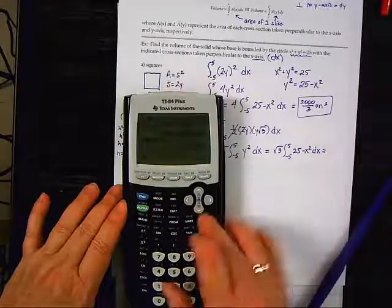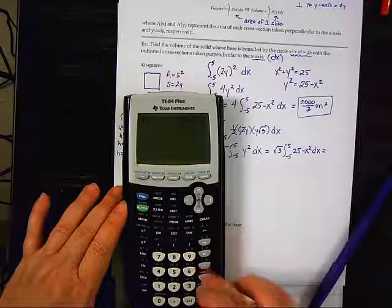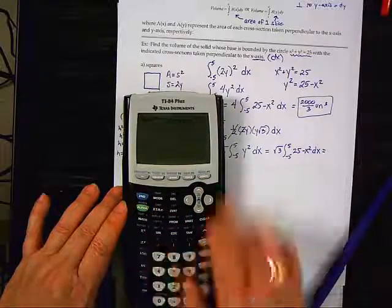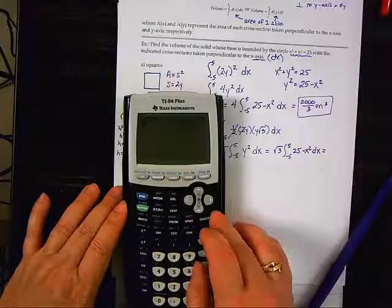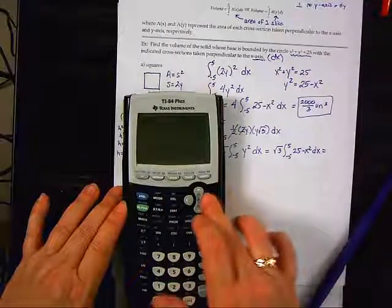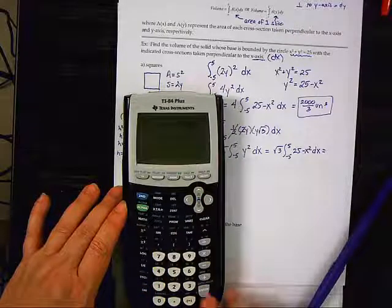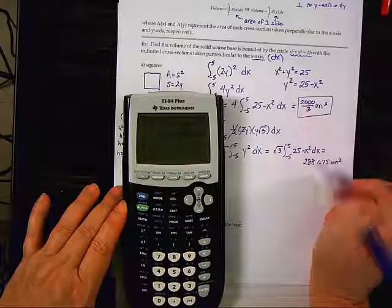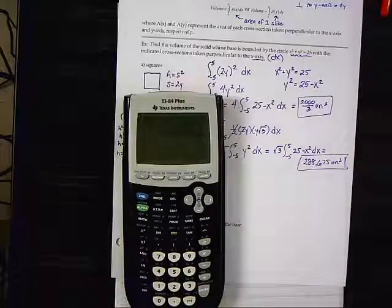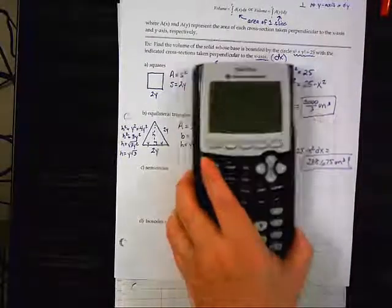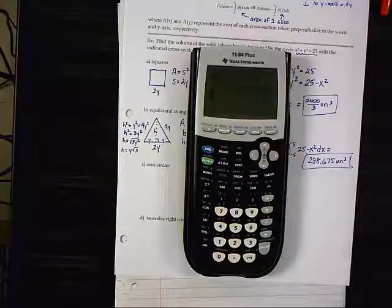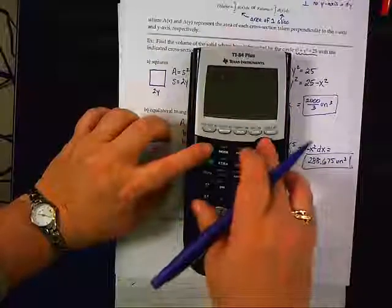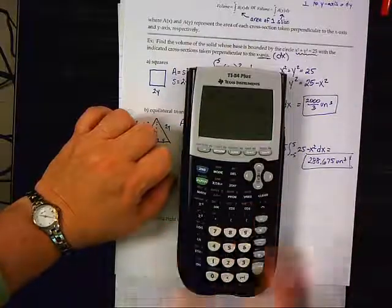So, calculator. We're going to use radical 3. Get out of there. Math 9. Negative 5 to 5. 25 minus X squared DX. Whoops. Whoa. DX. There we go. We get 288.675 cubic units. It does not make a fraction. Because the... Oh, you can't see that very well at all, can you? Boy. Now, the calculator is dark. Let's try this. That doesn't help either. Well, that just stinks. I can't make anything right in this. It's like the old game.